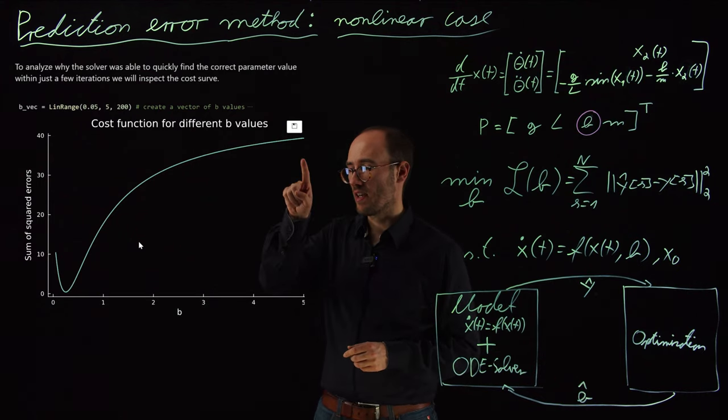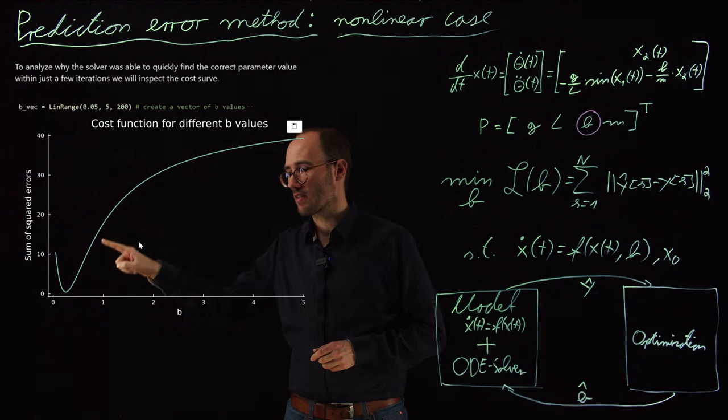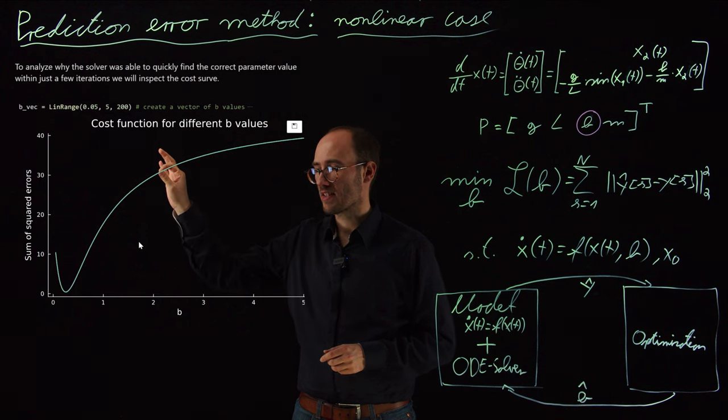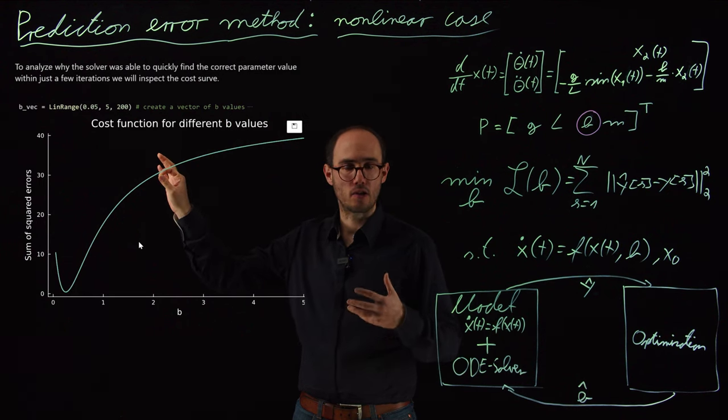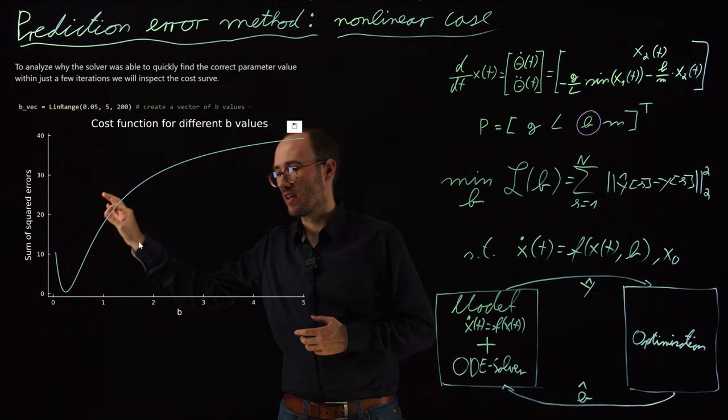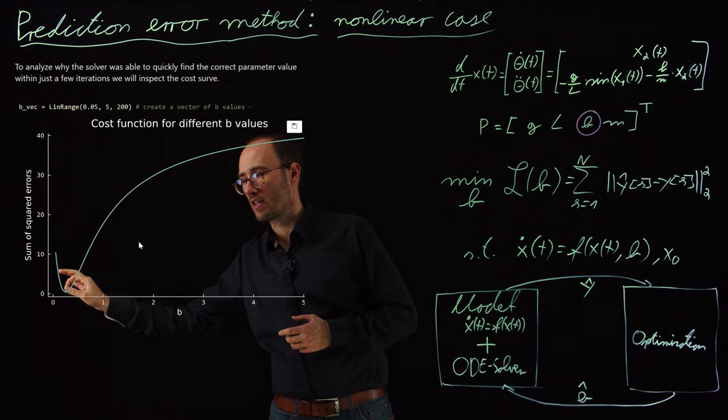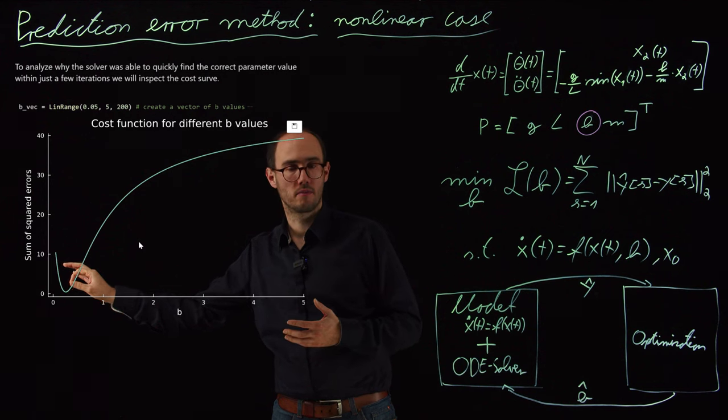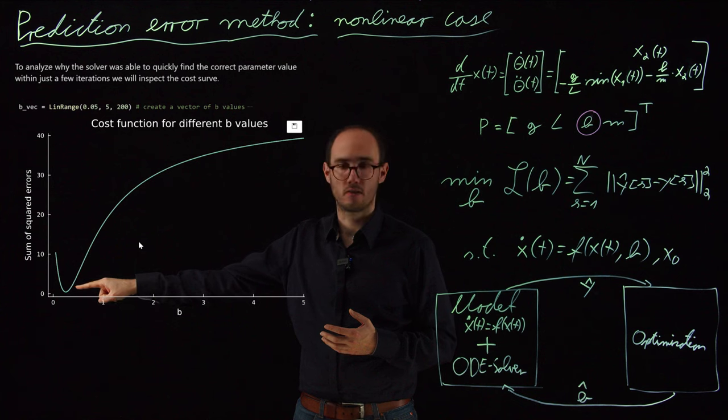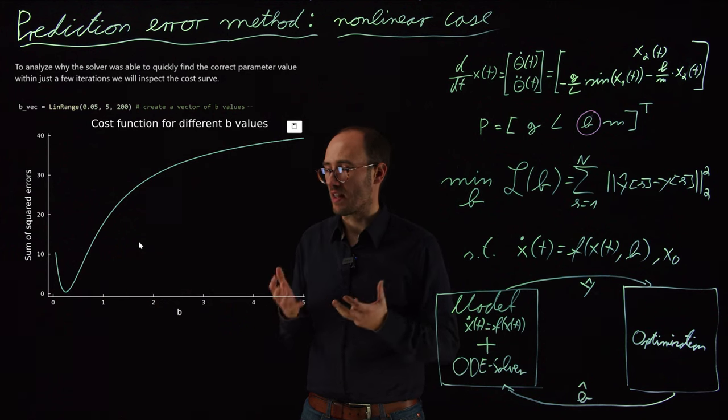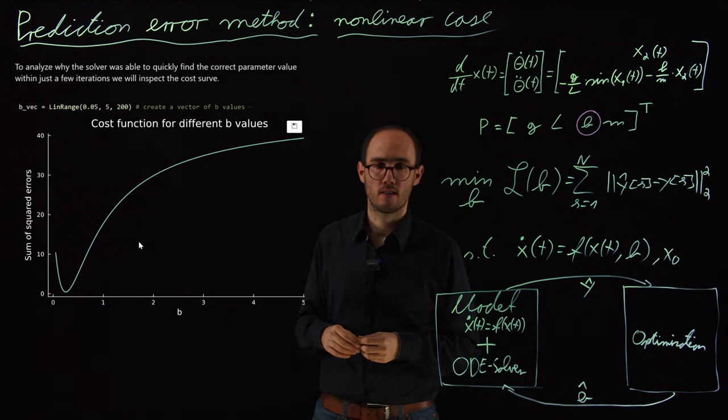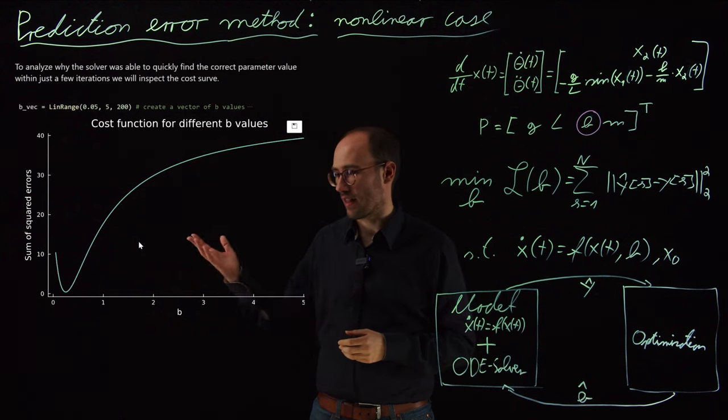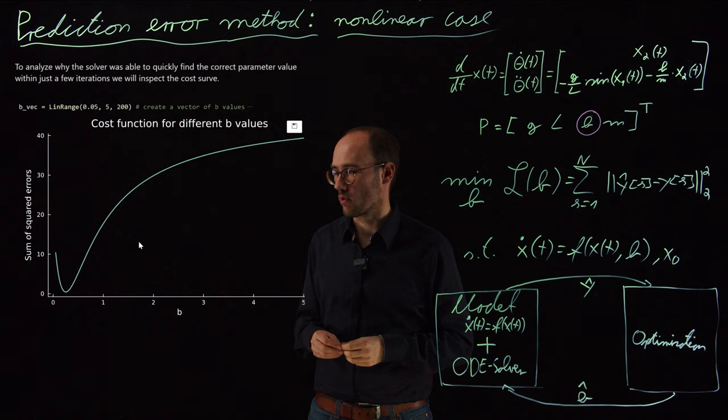We can see that this is basically a very nice cost function because independently from where I took an initial guess that if I apply any gradient descent based method like the Newton method, that this will very nicely drop down into this optimum here where we only have one minimum. So that means that this local optimum here is also directly the global optimum. And that is actually the perfect use case for gradient descent based solvers like the Newton approach. And that's also the reason why it converged so nicely and quickly.